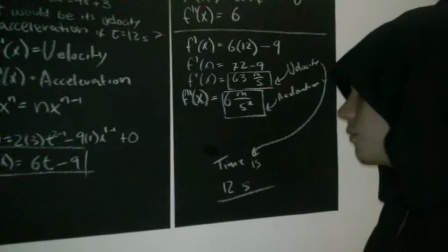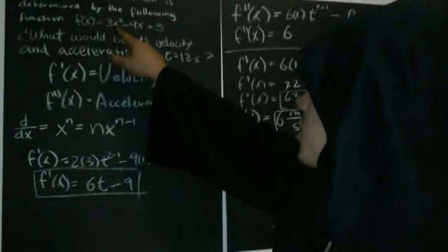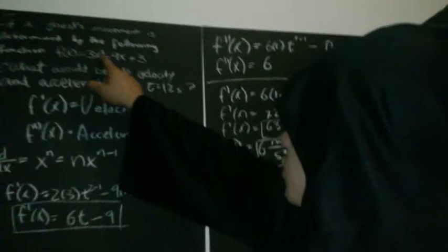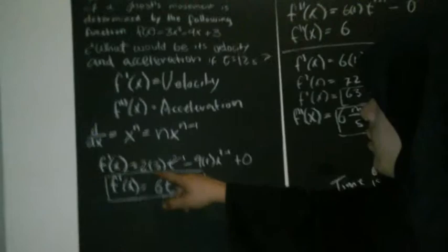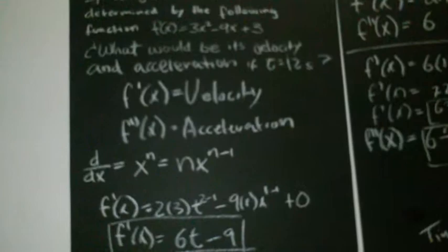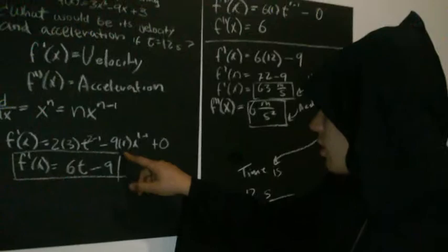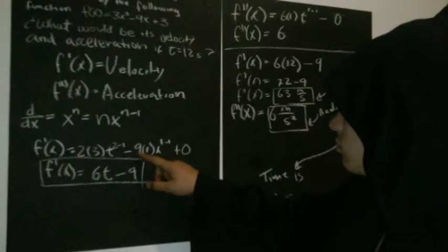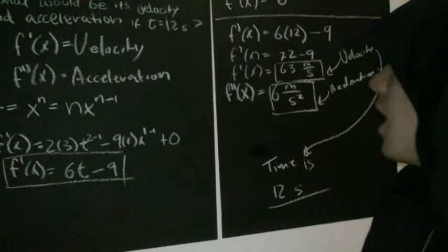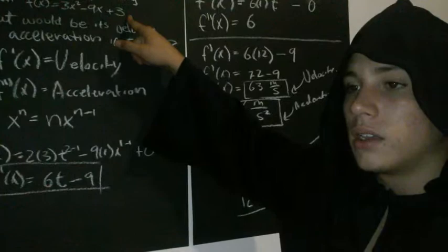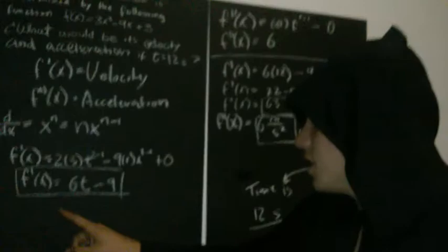So, when we derivate this expression, 3x to the square, we transport these two, and multiply it by 3, that was the expression we had here, the coefficient, and then we subtract 1 to the exponent, then we do the same in this expression. The exponent is equals 1, so it's 9 times 1, and then we subtract 1 to the exponent, leaving only 9, because the exponent will be elevated to 0, and that will mean it's 1. And, if the expression doesn't have any variable, then the derivative will be 0. So, the derivative we obtain from this function will be this expression, 6 times t minus 9.